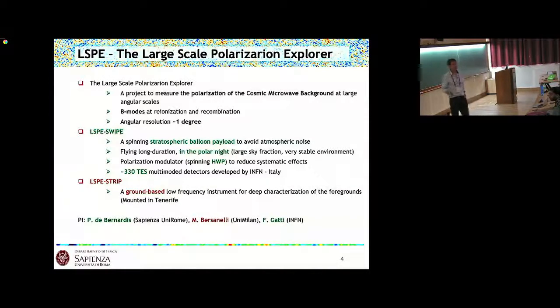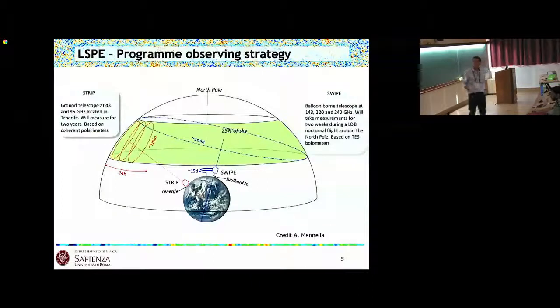It's planned to fly with a long duration flight, 15 days in the polar night from the North Pole. This is very technologically complicated, but this way we can have large sky fraction in a very stable environment because it's always dark with no sun. There is a polarization modulator made with a spinning half-wave plate to reduce systematic effects, and there are 330 multi-mode TES detectors developed in Italy.